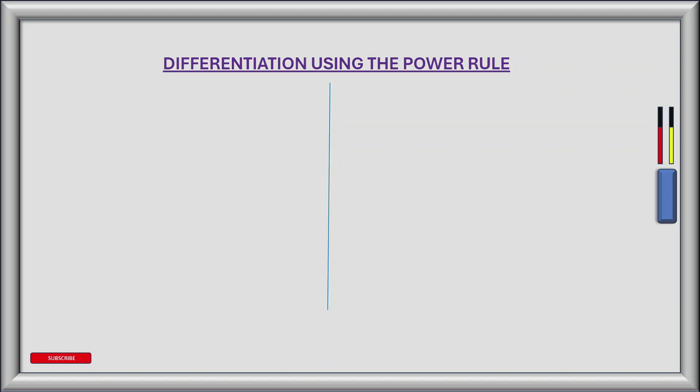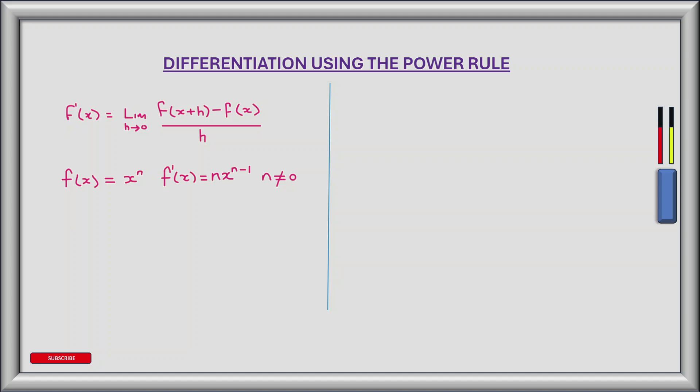The power rule simplifies the way we take derivatives of polynomials. In the video I made on limits and derivatives, we looked at the derivative of a function f of x, or f prime, being the limit as h tends to 0 of f of x plus h minus f of x, all divided by h. This is called the power rule and it simplifies the way we take derivatives of polynomials.